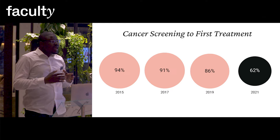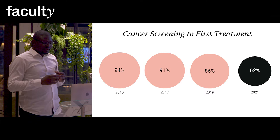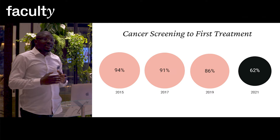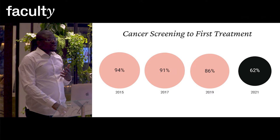This target has always been met up until 2019 when COVID started, and in 2021 there was a significant drop to 62%. This is due to the fact that during the pandemic, NHS had to reallocate a lot of resources to emergency services, and services such as cancer care had a negative impact.